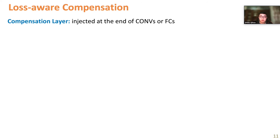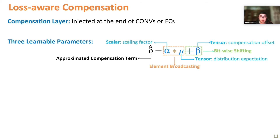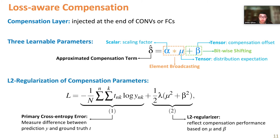The compensation layer is designed as an independent component that can be added at the end of both convolutional and fully connected layers. Each compensation layer holds three learnable parameters: the scaling factor alpha, the distribution expectation mu, and the compensation offset beta. The calculation of the compensation term is optimized via element-wise broadcasting and batch-wise shifting, thus holding slight overhead. To improve learning speed, we also designed an L2 term to better capture the significance of compensation parameters, with a coefficient lambda.